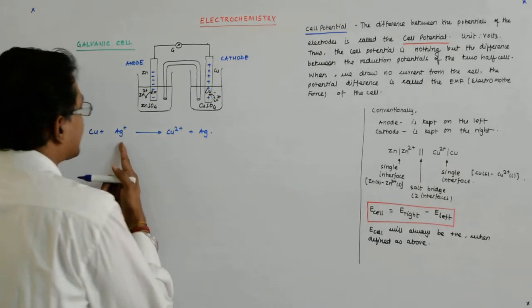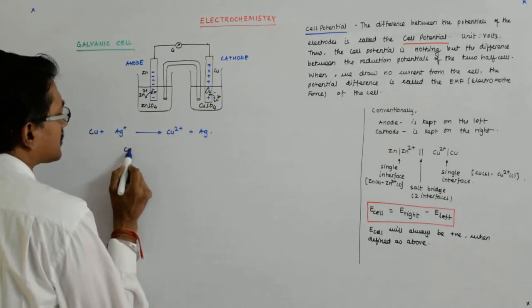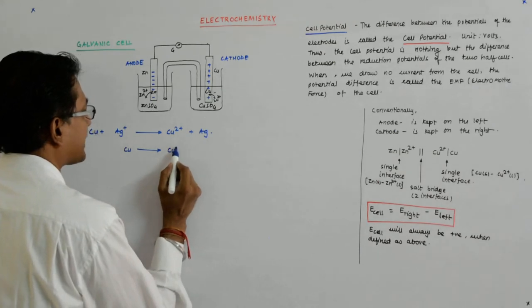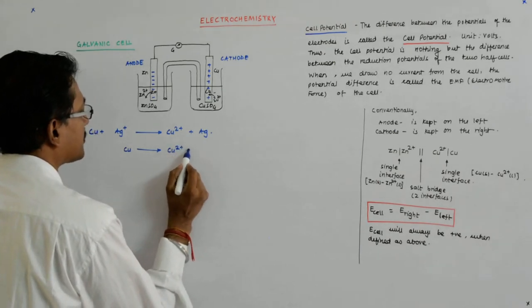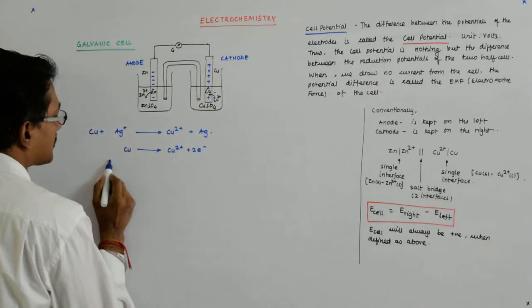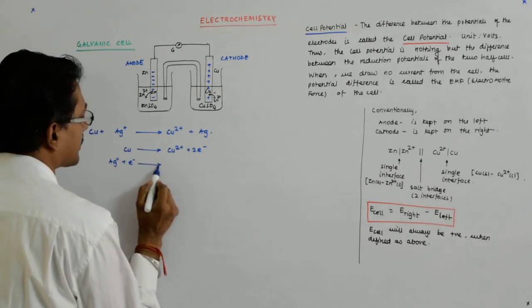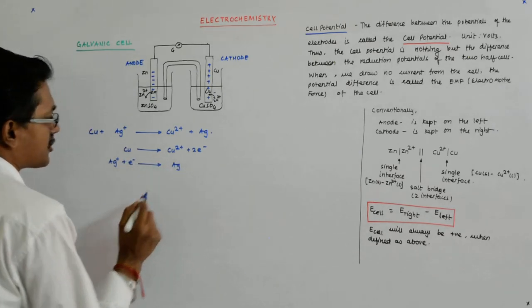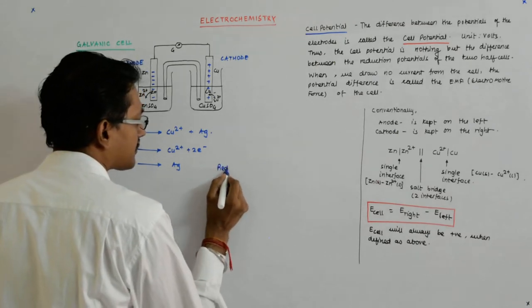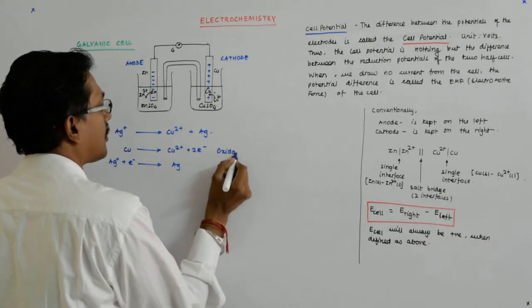Let us try to write the half cell reaction. This gives you this plus two electrons, and here Ag⁺ plus one electron gives you Ag. This is the reduction, this is oxidation.